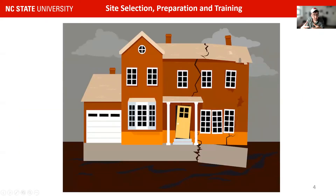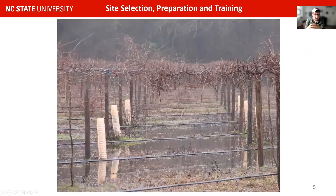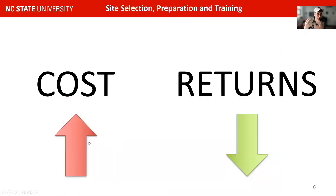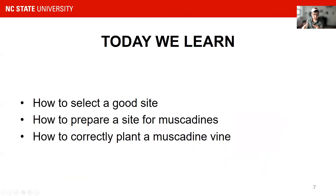Like a house, the better you prepare and the better that foundation is, the less problems you will have with your house or your vineyard later. If you do not have a good site and you haven't selected or prepared your site well, your vineyard will have problems later on. That increases costs and lowers returns, sometimes to a point where your vineyard is not cost effective at all. Today we learn how to select a good site, how to prepare a site for muscadines, and how to correctly plant a muscadine vine — the parts of your foundation you have to get right if you want a good muscadine crop over the next 10, 20, or 30 years.